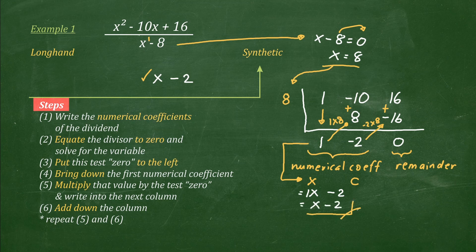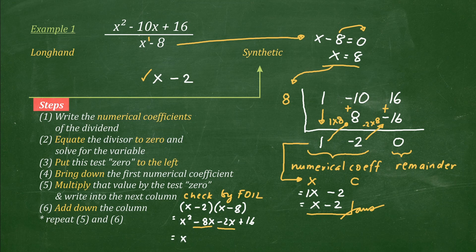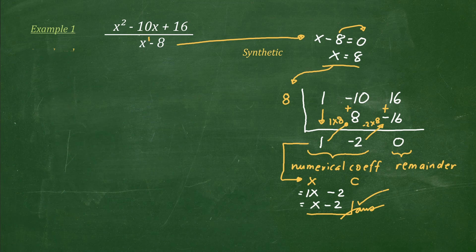We can, of course, check the answer by comparing the results from longhand division, or by multiplying the answer by the divisor using the FOIL method, as quickly shown here. Now, this solution looks long, but actually it should be much faster because it will only involve the key computation part. Hopefully, this second example will be more convincing.